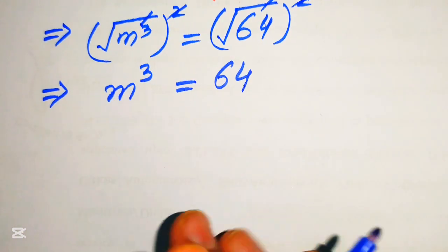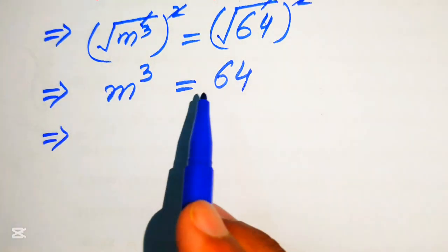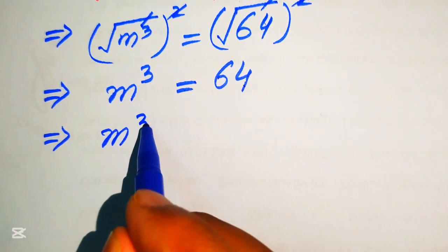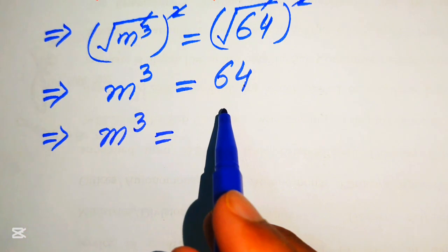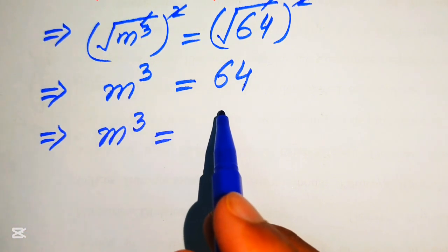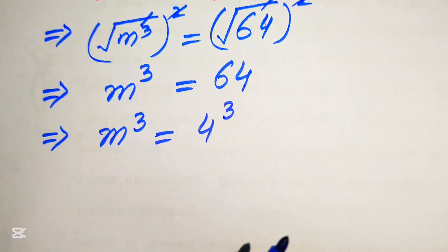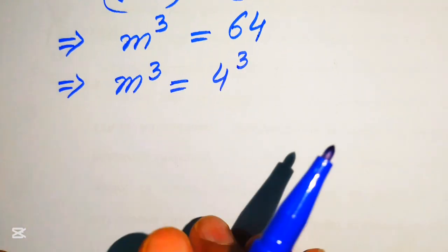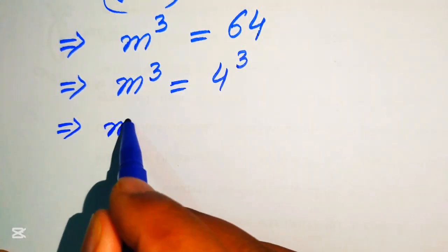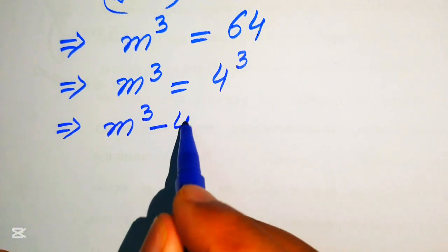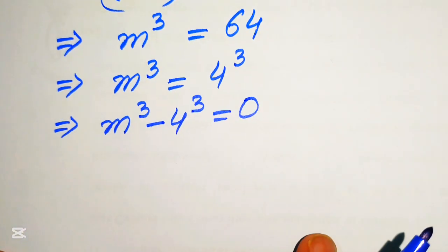Now we simplify further. We have m cubed equals to 64, and we know that 64 equals 4 cubed. So we move 4 cubed to the left-hand side and it becomes m cubed minus 4 cubed equals to 0.